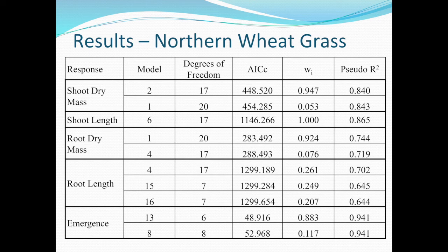If you look at root length, you can see that the W-sub-i values are quite small because none of the models are very good at describing root length, and the R-squared values aren't nearly so high. There are many models that can describe root length equally poorly. The model averaging approach deals with them all simultaneously — it doesn't force you to pick just the one.